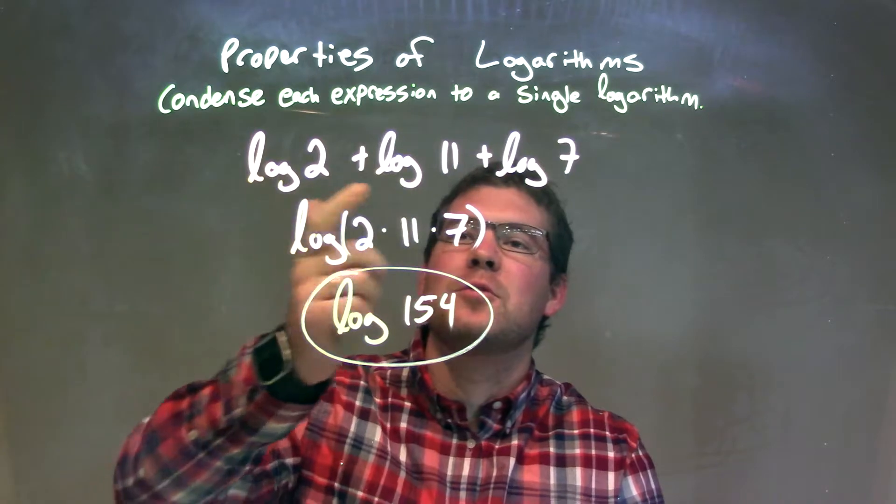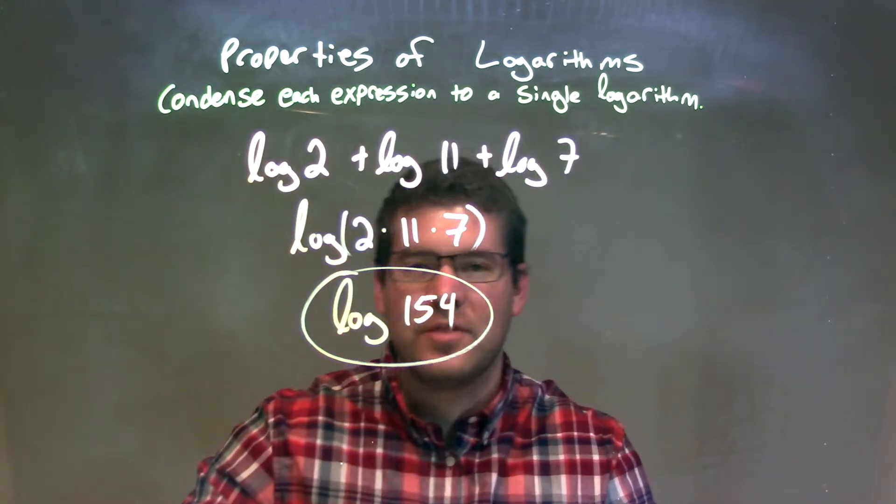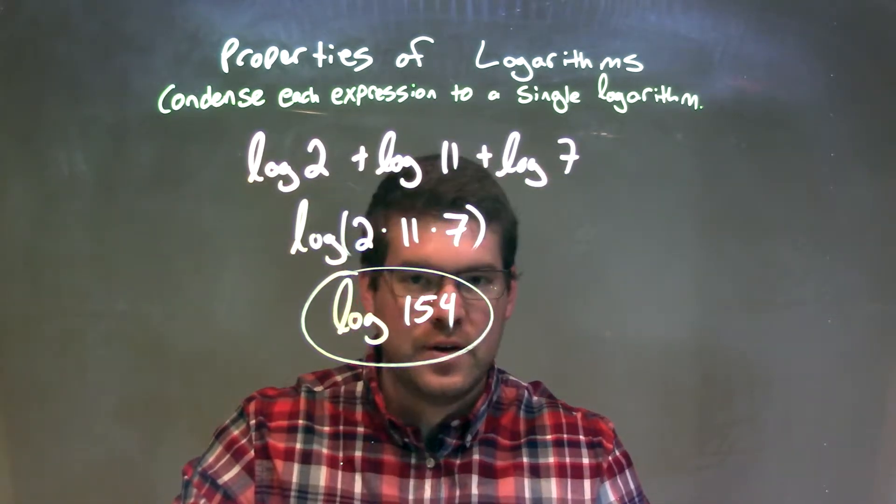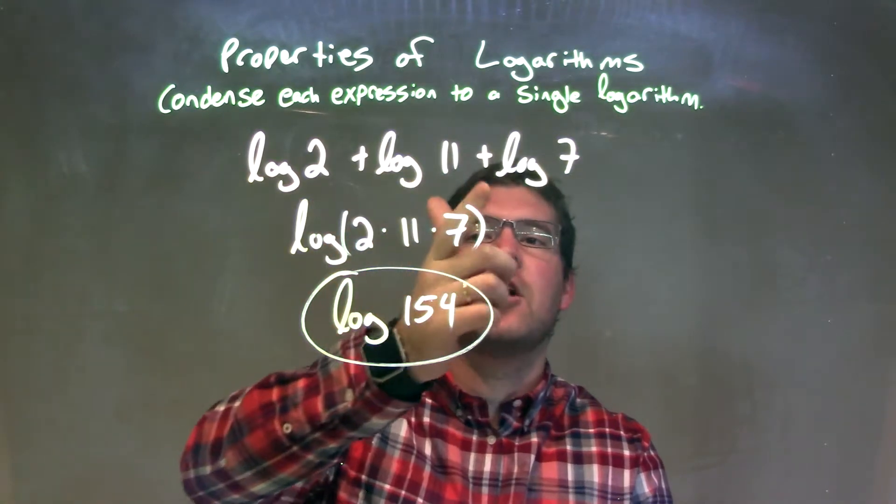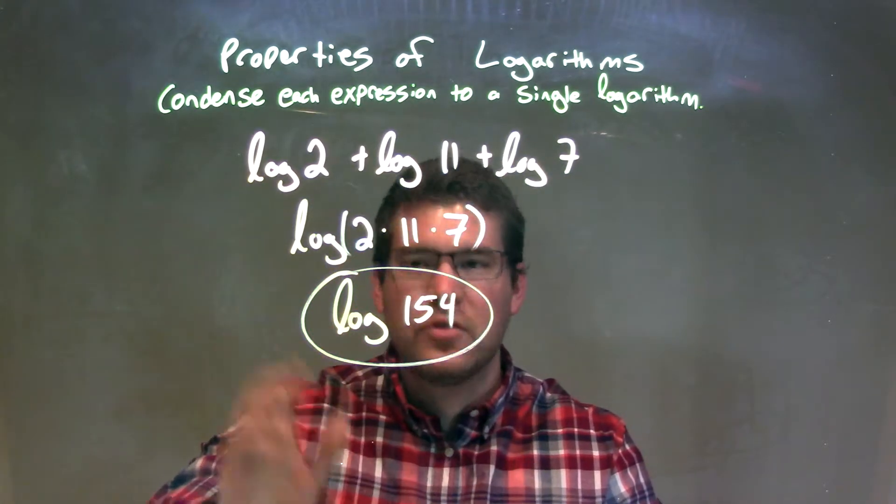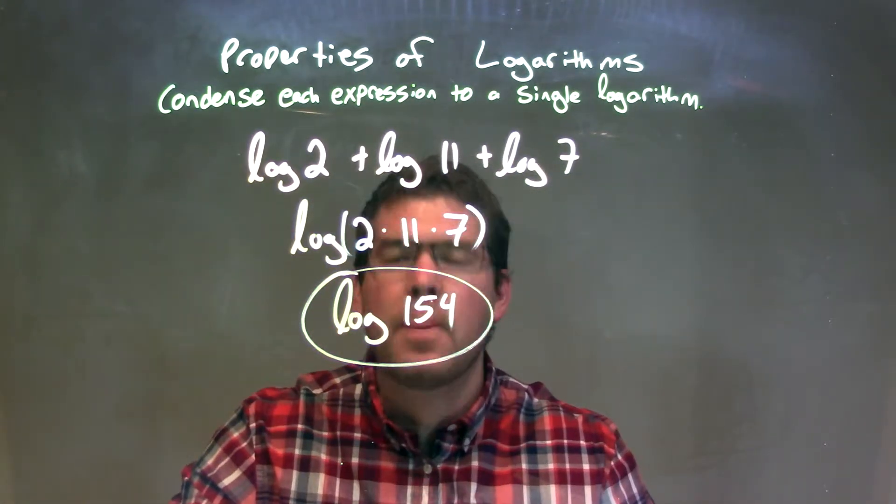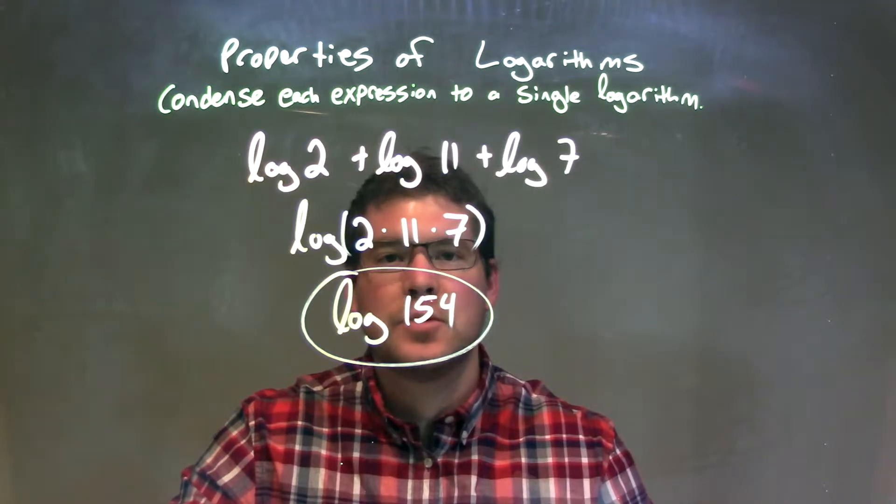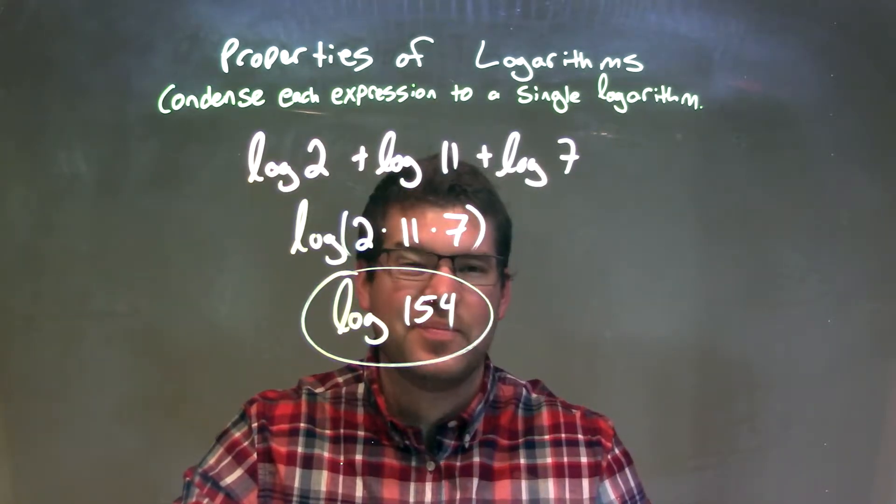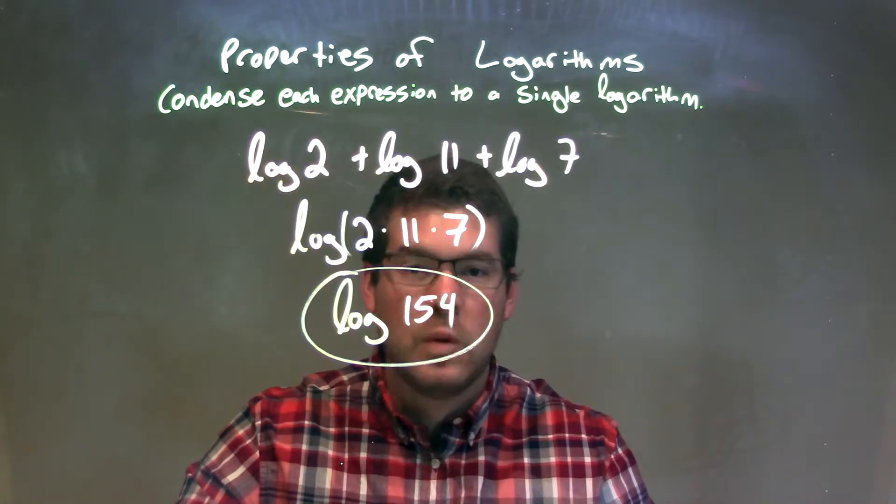Let's recap. We're given log of 2 plus log of 11 plus log of 7. When we condense those together, that addition separating each log becomes multiplication of just the numbers inside of one big log. Then from there, we multiply 2 times 11 times 7 to get 154. So our final answer here is just log of 154.